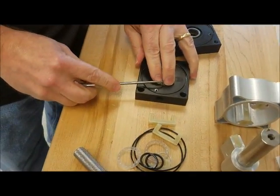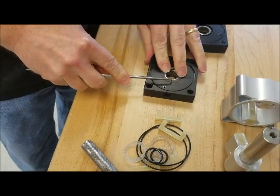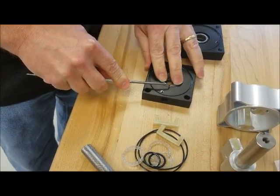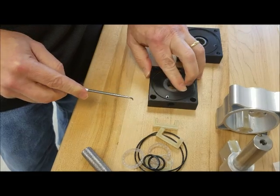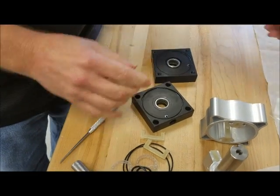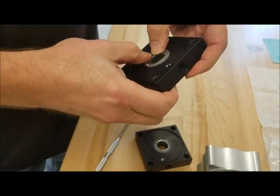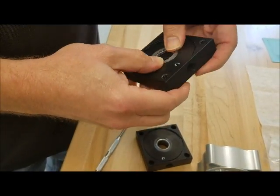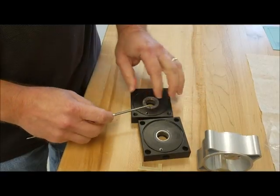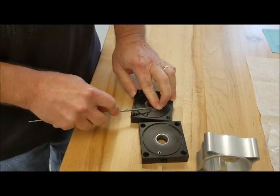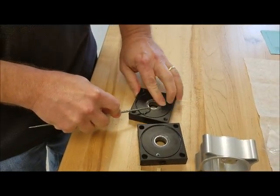You want to stick the pick down beside the quad ring and get all of the air out from underneath of it the best you can. We'll do the same thing with our other one. We're going to make sure the holes are up. We're going to get it in the groove. Get it seated the best we can. We're going to use our pick to get all the air out from underneath of the quad ring.